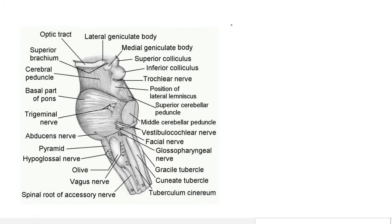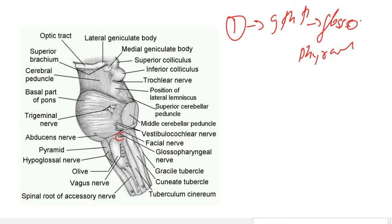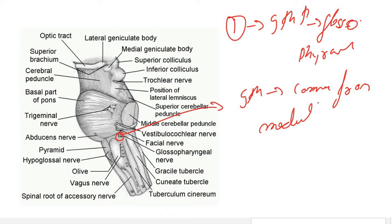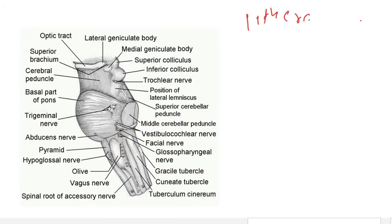The cranial nerves originating from the medulla include the ninth cranial nerve, the glossopharyngeal nerve, and the tenth cranial nerve, the vagus nerve. The rootlets of the vagus nerve are located between the tuber synodium and the olive. The eleventh cranial nerve, the spinal accessory nerve, also originates here.